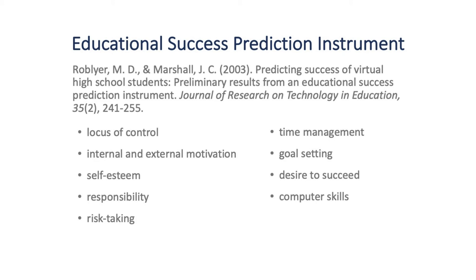To date, there has been very little research into K-12 student success in the online learning environment. In fact, one of the only empirical lines of inquiry has been the work of Margaret Robley into the Educational Success Prediction Instrument. Originally proposed in 2003, it was a 70-item instrument that focused upon nine areas the team felt were required for K-12 students to succeed in an online environment. You'll notice that only one of those nine items is focused upon technology, and the other eight are focused upon soft learning skills. Over the years, Dr. Robley and her team have continued to work on the instrument in an effort to decrease its size while continuing to maintain its validity.